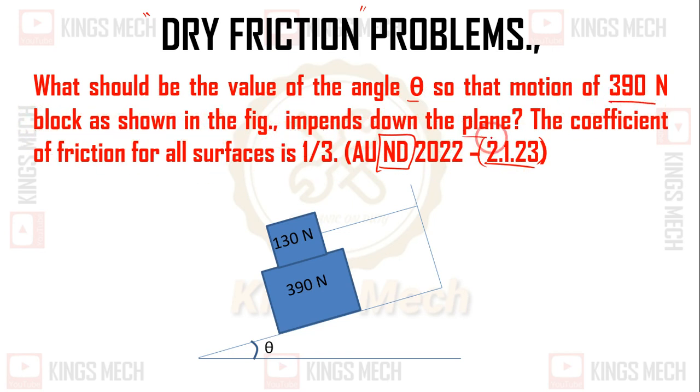The coefficient of friction for all the surfaces is 1/3, that is your mu. The 390N block is on the bottom, tied to a string. The string tension will be in the opposite direction. The block is on an inclined plane. This is an important problem, so let us go to the video.